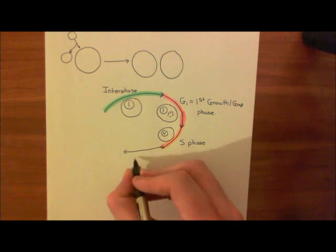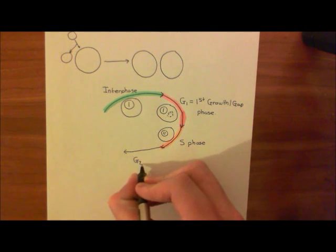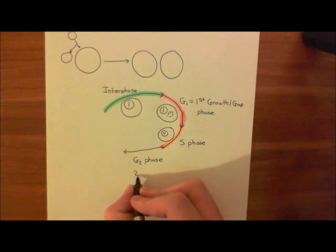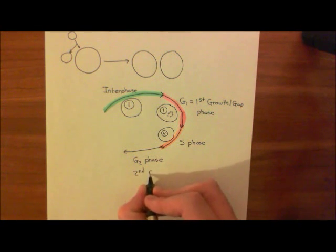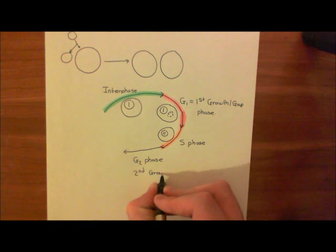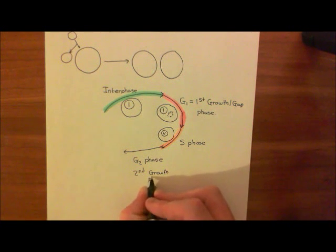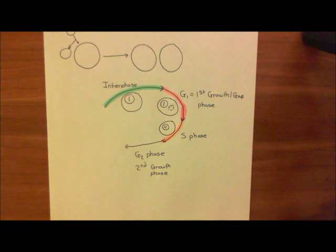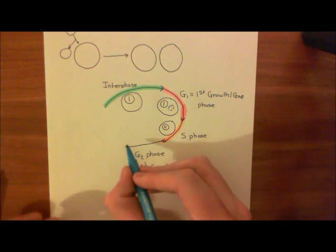The next phase is a phase known as G2 phase. G2 phase, the second growth phase or second gap phase, is what it stands for. In the second growth phase, what you're going to do is you're going to make more protein. So it's similar to the first growth phase. You're going to make more protein because the cell is going to divide into two. It's going to need duplicates of all its proteins. So again, in G2, you're getting ready to divide by making more protein.